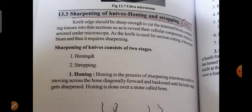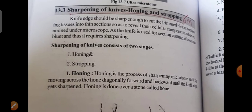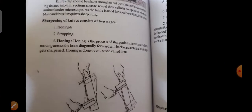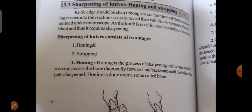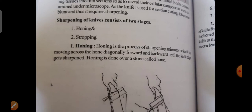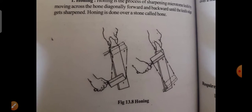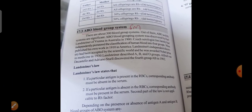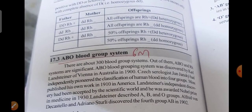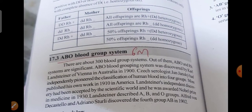A microtome knife is mainly used to cut trimmed blocks containing tissues into thin sections to reveal their cellular components. Honing is the process of sharpening a microtome knife by moving it across the hone diagonally, forward and backward, until the knife edge gets sharpened. This process is done over a stone called a hone.